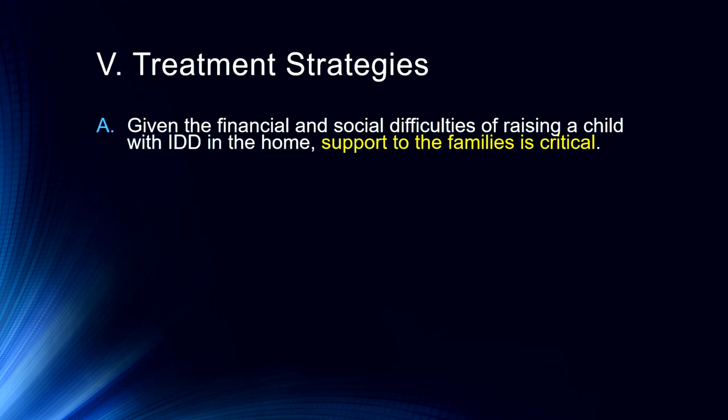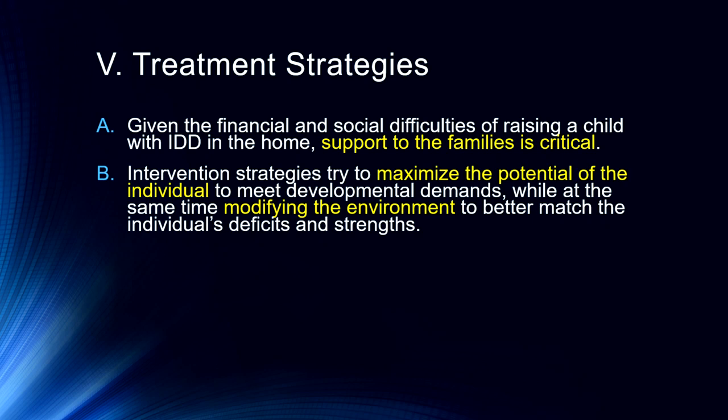Some treatment strategies: mostly it's family support, addressing the financial and social difficulties of raising a child with intellectual disabilities. Generally setting up school support and social support, making sure the parents are not overwhelmed, since rather than the normal developmental timeline where kids become more independent, that oftentimes either never happens or takes a great deal longer. Intervention strategies generally try to maximize the potential of the individual through very individualized plans, while also modifying the environment to better match the individual's deficits and strengths. This can bring in an occupational therapist, physical therapist, assistive technology, and help modify the home environment.